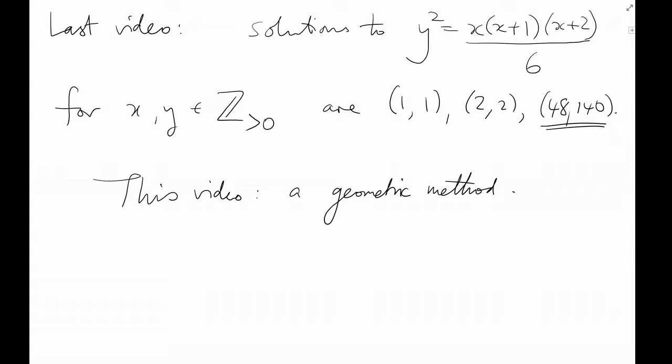First, let's take a simpler situation, one that we've studied before. Example 1: Find all the Pythagorean triples, that is, all positive integers a, b, and c such that a squared plus b squared equals c squared.